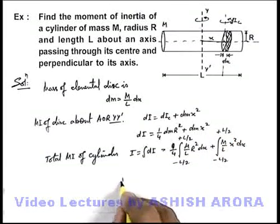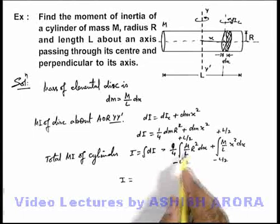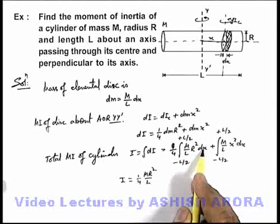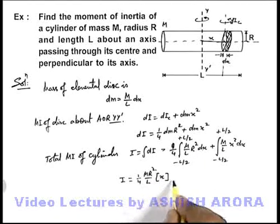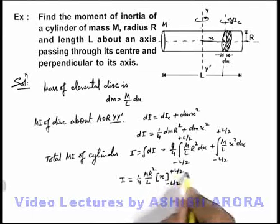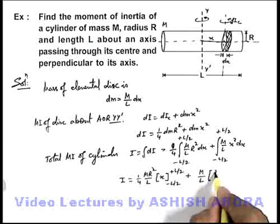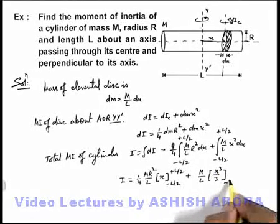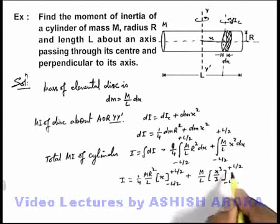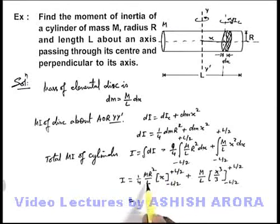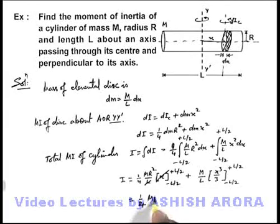On integrating, the moment of inertia we get is (1/4)·(m·r²/l). Integrating dx gives x, and applying limits from -l/2 to +l/2 gives l. For the second term, it is (m/l) and the integration of x² gives x³/3, with limits from -l/2 to +l/2. On substituting the limits, l/2 - (-l/2) = l, so the l cancels and we get (1/4)mr².